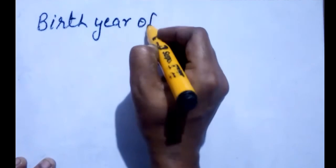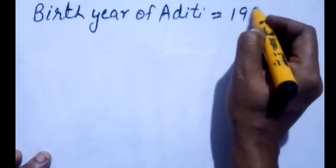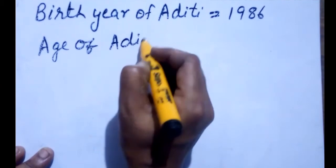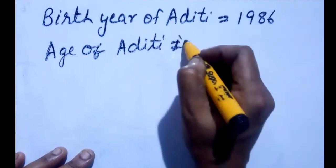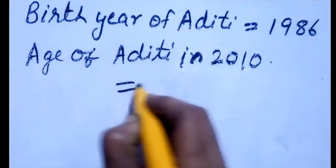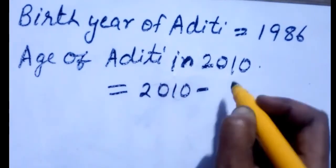Let us do the solution. Birth year of Aditi is equal to 1986. Age of Aditi in 2010 is equal to 2010 minus 1986.